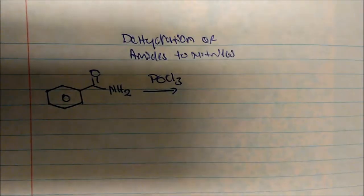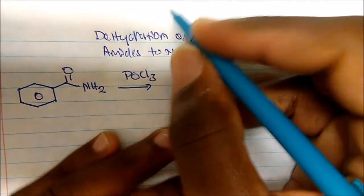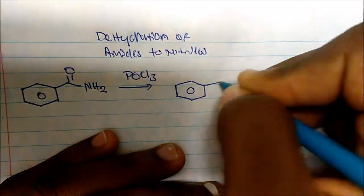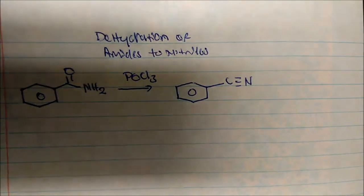This is called phosphorus oxytrichloride. If I take phosphorus oxytrichloride and react it with benzamide, I get the nitrile.